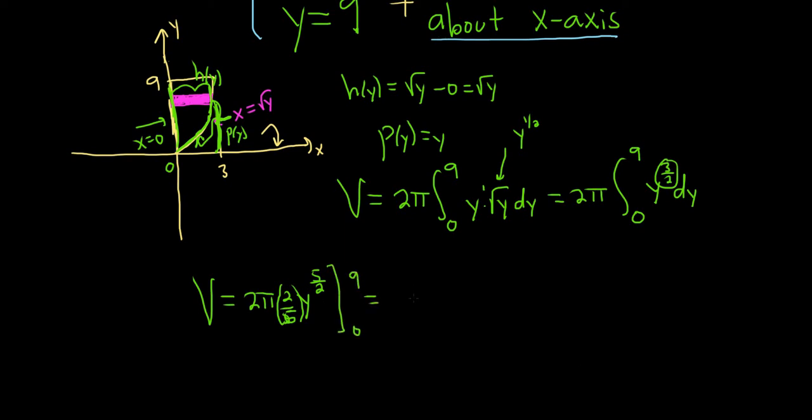Let me clean this up. This is 4 fifths pi, y to the 5 halves. And we're going from 0 to 9. So this is 4 fifths pi. Plug in the 9. We get 9 to the 5 halves. Subtract. Plug in the 0. We get 0 to the 5 halves.